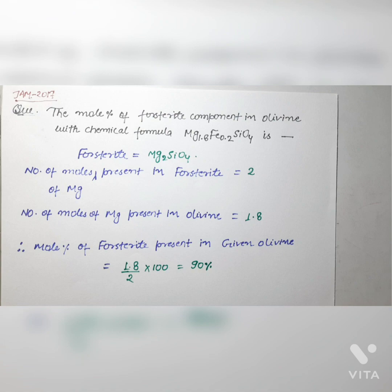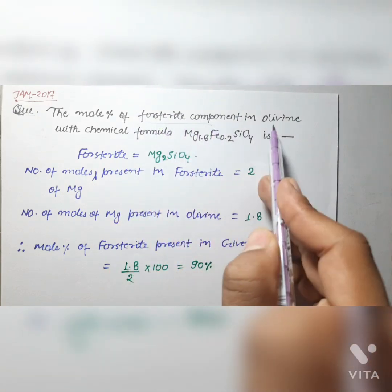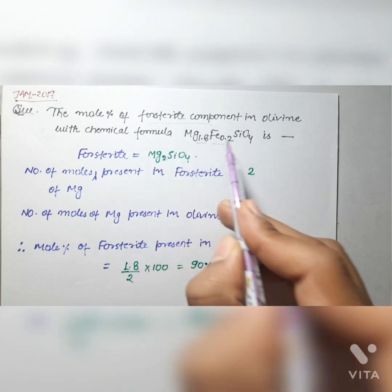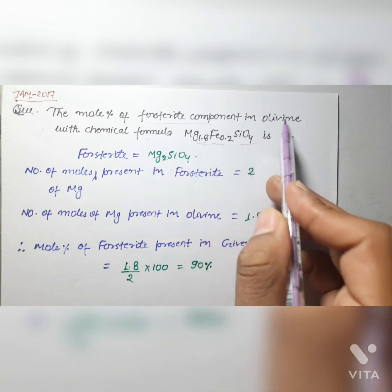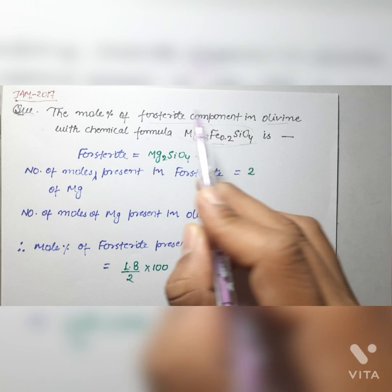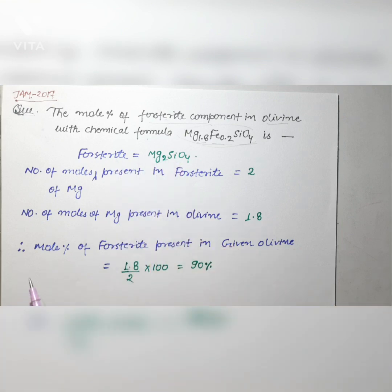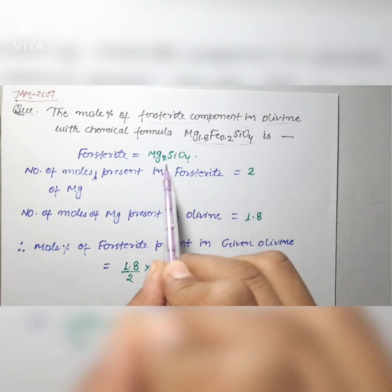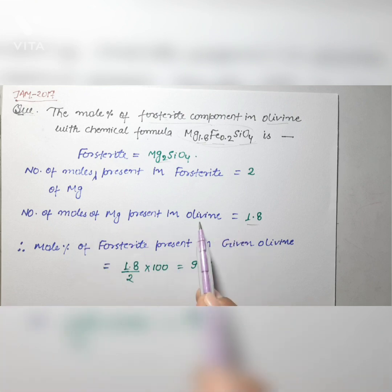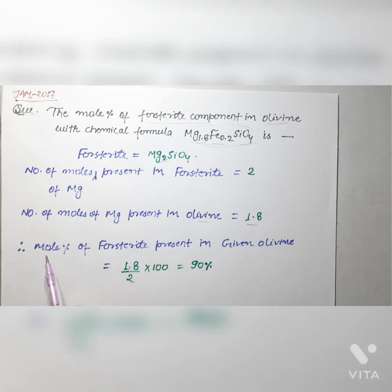The last question is from JAM 2017. The mole percentage of the forsterite component in olivine with chemical formula Mg₁.₈Fe₀.₂SiO₄ is what? The chemical composition of forsterite is Mg₂SiO₄. The number of moles of magnesium in forsterite is 2, and in the given olivine it is 1.8. To calculate the mole percentage of forsterite in olivine: (1.8 ÷ 2) × 100 = 90%.